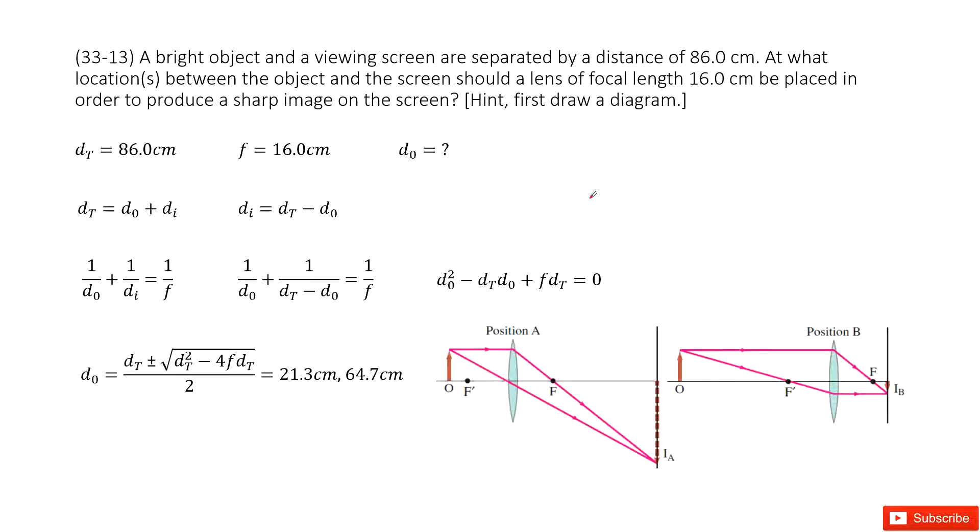Chapter 33 is about lenses and optical instruments. We can see we have a lens. We know the distance from the object to the image is 86.0 centimeters. We write it there and define it as dt. This dt is the distance between the image and the object. The focal length for this lens is given.